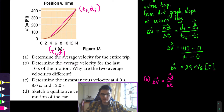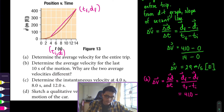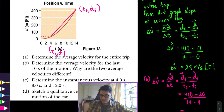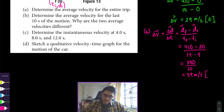We draw the secant line because average velocity is the slope of the secant line on a position-time graph. The final position is approximately 410 m as before, but now the initial position at t=4 seconds is approximately 20 meters. So: (410 - 20) divided by (14 - 4) = 390 divided by 10 = 39 meters per second east.